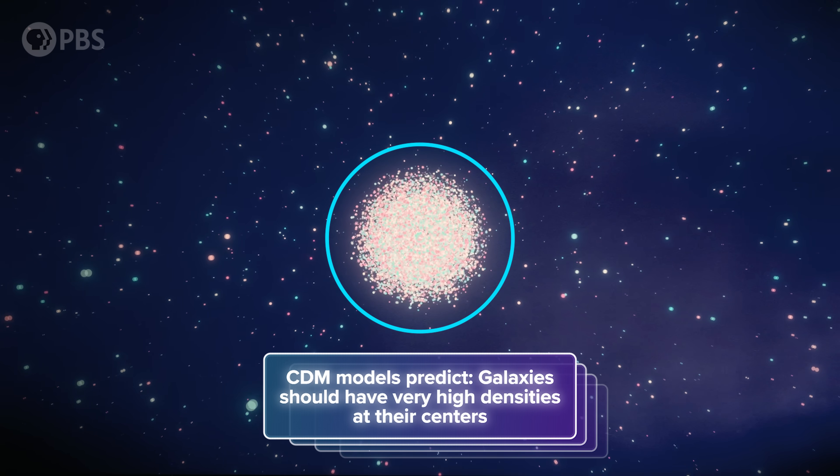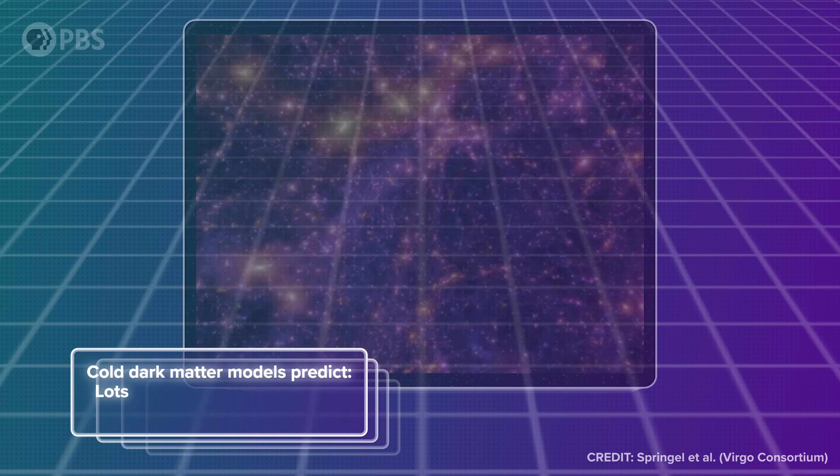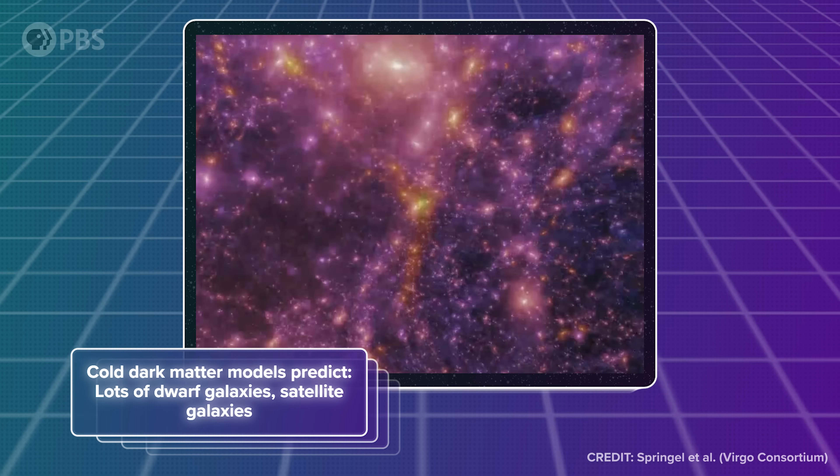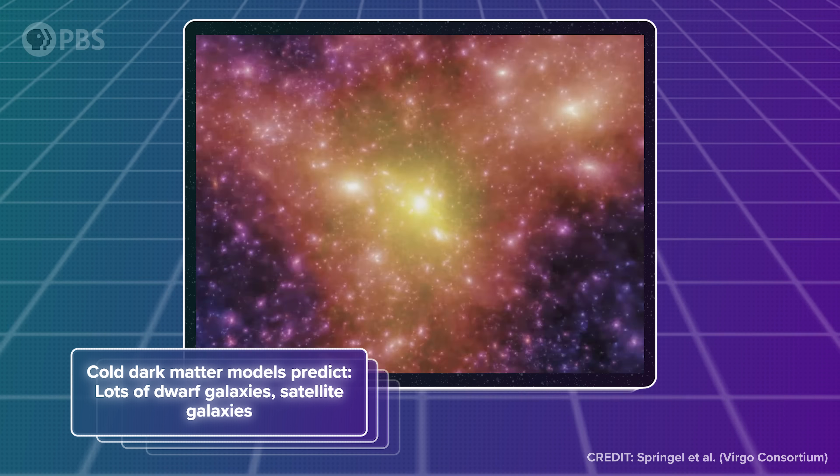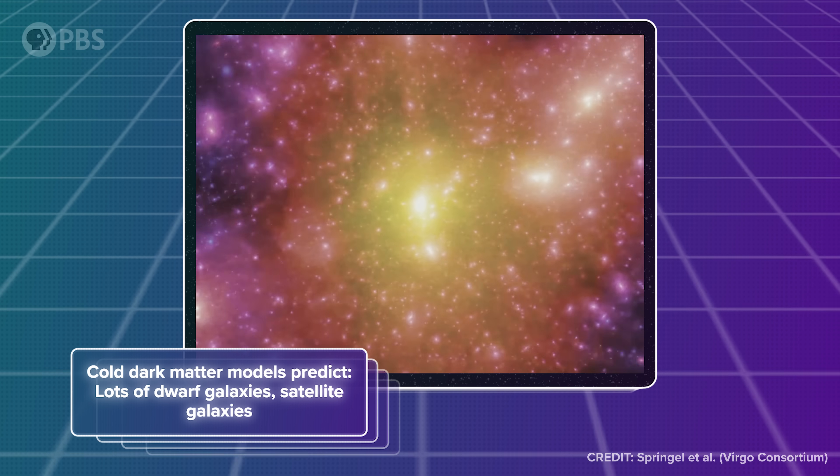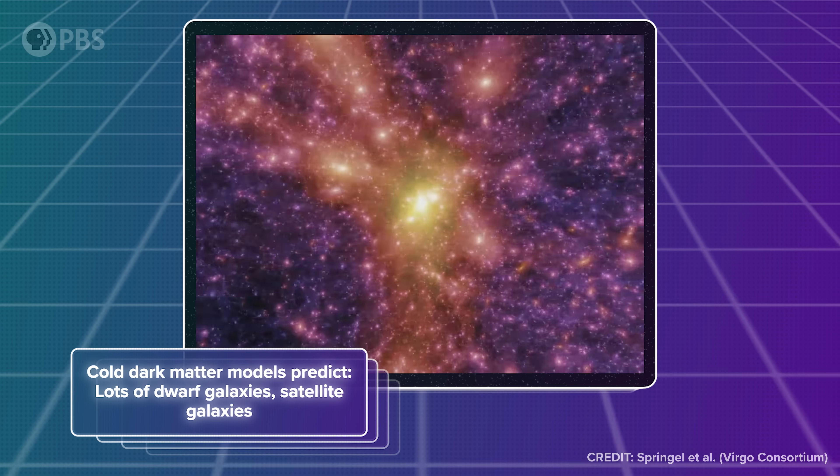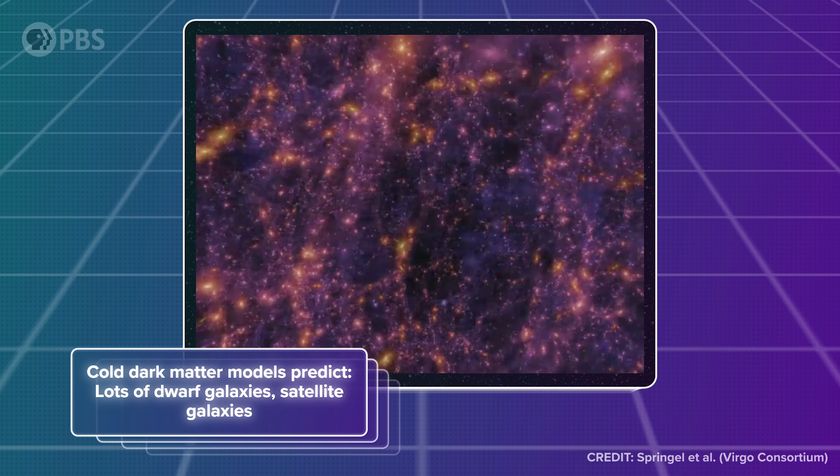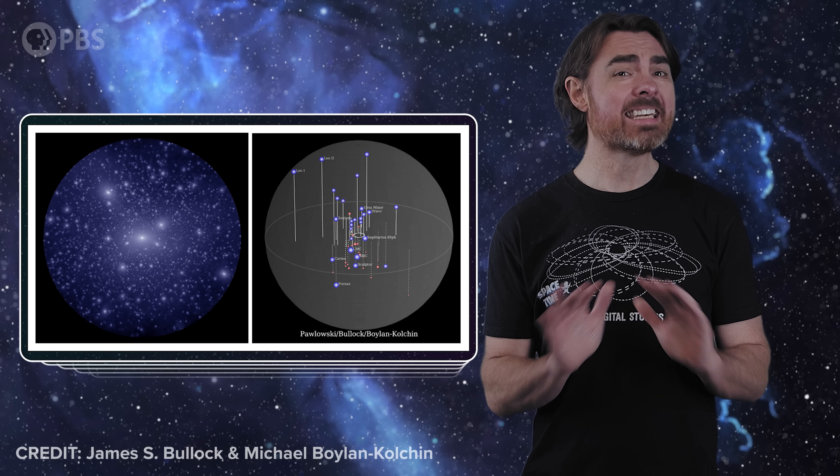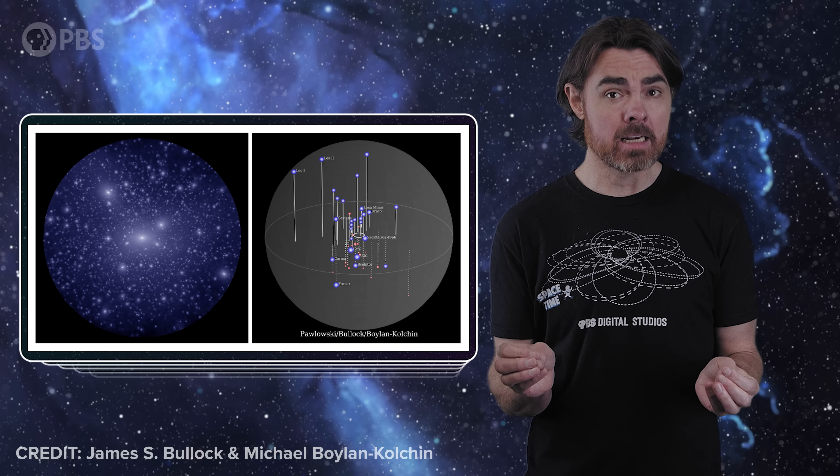While cold dark matter models like WIMPs predict the large-scale structure and the number of big galaxies in the universe very well, historically they've struggled to reproduce the finer details of structure formation. For example, CDM models predict that galaxies should have very high densities at their centers. They also predict that there should be lots of smaller clumps of matter like dwarf galaxies and satellite galaxies. CDM models make these predictions precisely because the dark matter in CDM models is cold, which means its particles have lower speeds and tend to fall towards the centers of their gravitational wells. In most of our simulations, CDM models give you lots of small galaxies and give you large galaxies with high concentrations of stuff in the center, but in the real universe we don't see nearly as many small structures as are seen in most CDM simulations.